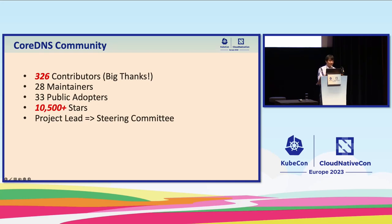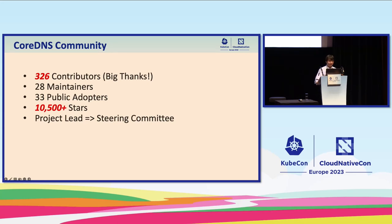CoreDNS has a very rich community. We have more than 300 contributors — big thanks to everyone who ever contributed or created a pull request. We have 28 maintainers. The reason we have so many is that the standard to be accepted as a maintainer is fairly low. If you create one significant pull request and find a maintainer to sponsor you, we will add you as a maintainer. We also have 33 public adopters — meaning companies or institutions using CoreDNS that are willing to share their name publicly on the project website.